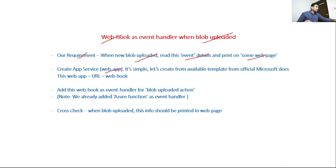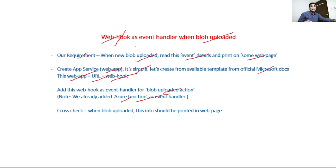We will create an App Service, that is a web app, using an available template from the official Microsoft site. This web app is nothing but a URL, and that URL is our webhook. We will add this webhook as an event handler for the blob uploaded action. We have already added an Azure Function as an event handler, so for this action we will have two subscriptions - two services interested in receiving this event - the Azure Function and this new webhook URL.